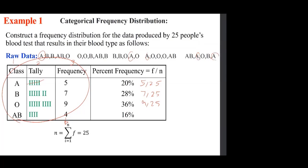Then 9 divided by 25 and the last one is 4 divided by 25. What you are looking at is known as relative frequency. For example, 5 over 25 simplifies to 1 over 5. Any relative frequency can be changed to a percent frequency. Both are essentially the same — they end up being the same number.